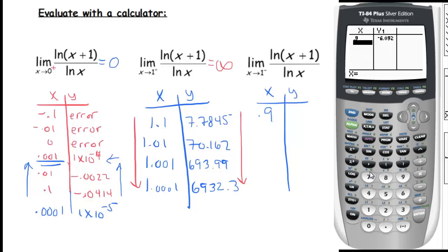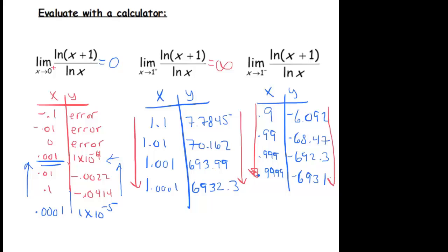Try point nine nine, and you get negative sixty eight point four seven. Point nine nine nine gives you negative six ninety two point three. Let's try point nine nine nine nine. You get negative six thousand nine hundred thirty one. So you can see now as x is approaching one from the left hand side, the y values are approaching negative infinity. So this is equal to negative infinity.